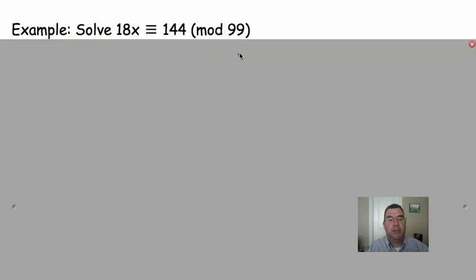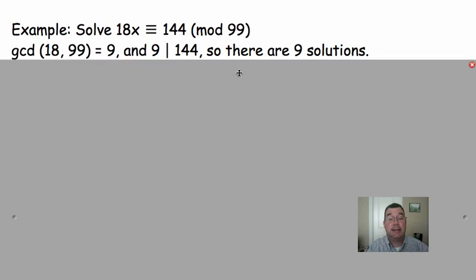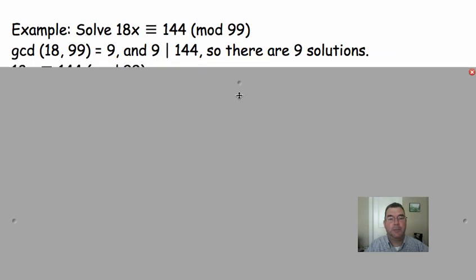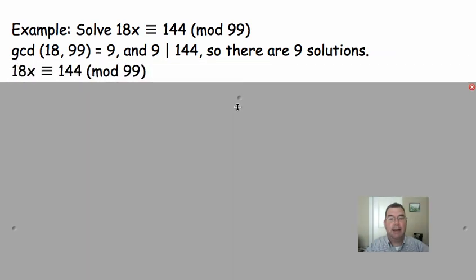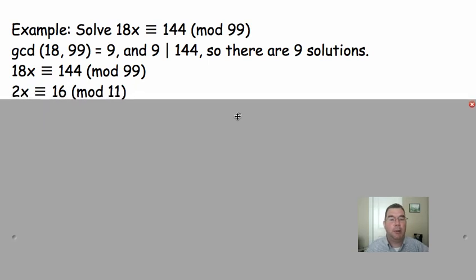So, now another example. I'm going to solve 18x is congruent to 144 mod 99. I'm going to, first of all, see if there are any solutions. So, I look at the first and last number, 18 and 99. The GCD of those is going to be 9. And if I look at the middle number, 9 is a factor of 144. So, there are going to be 9 solutions.